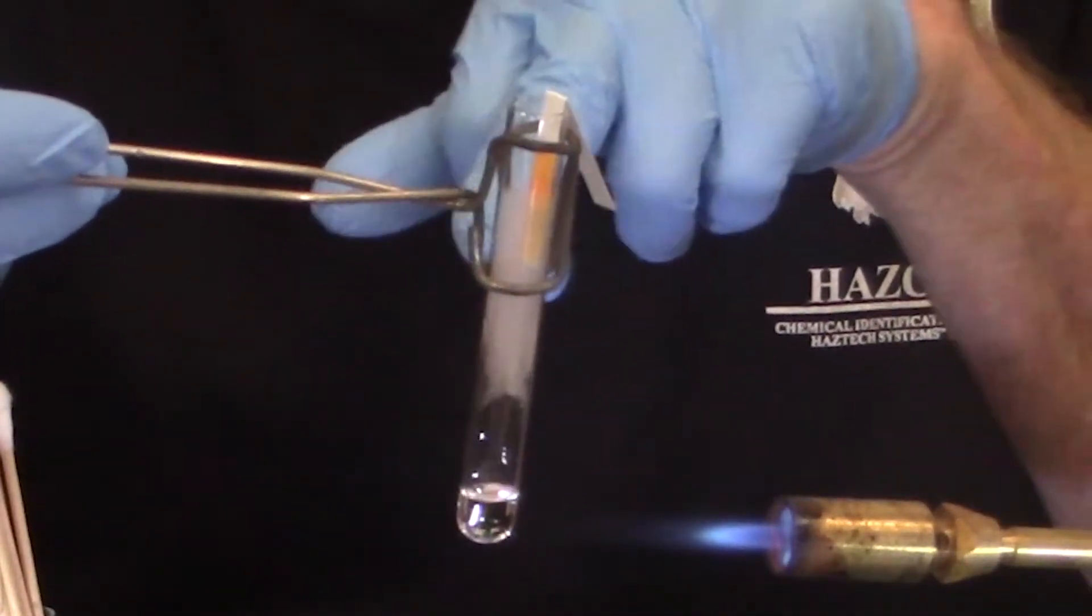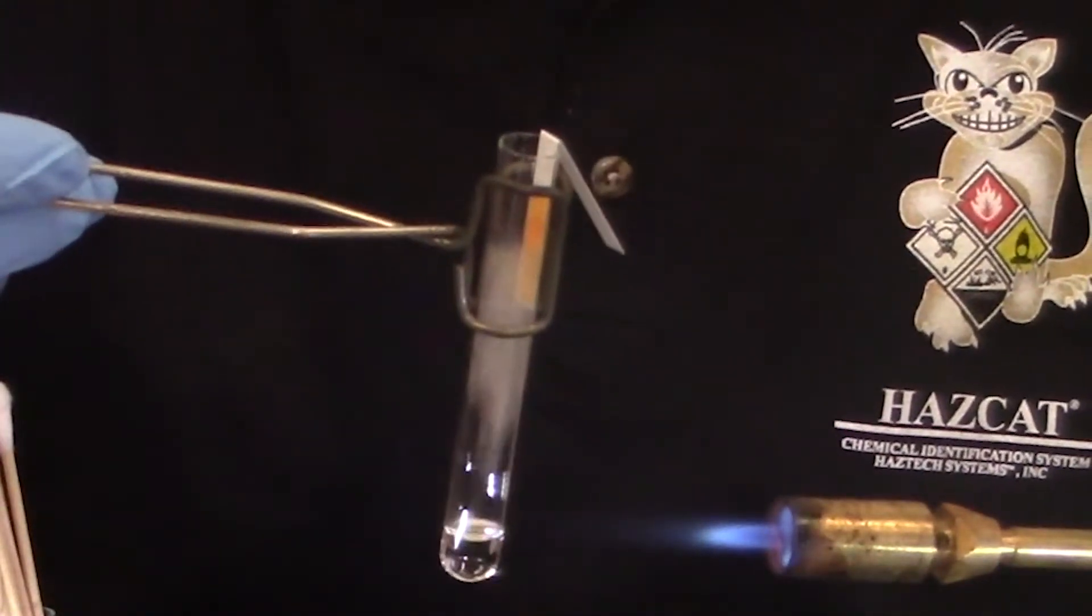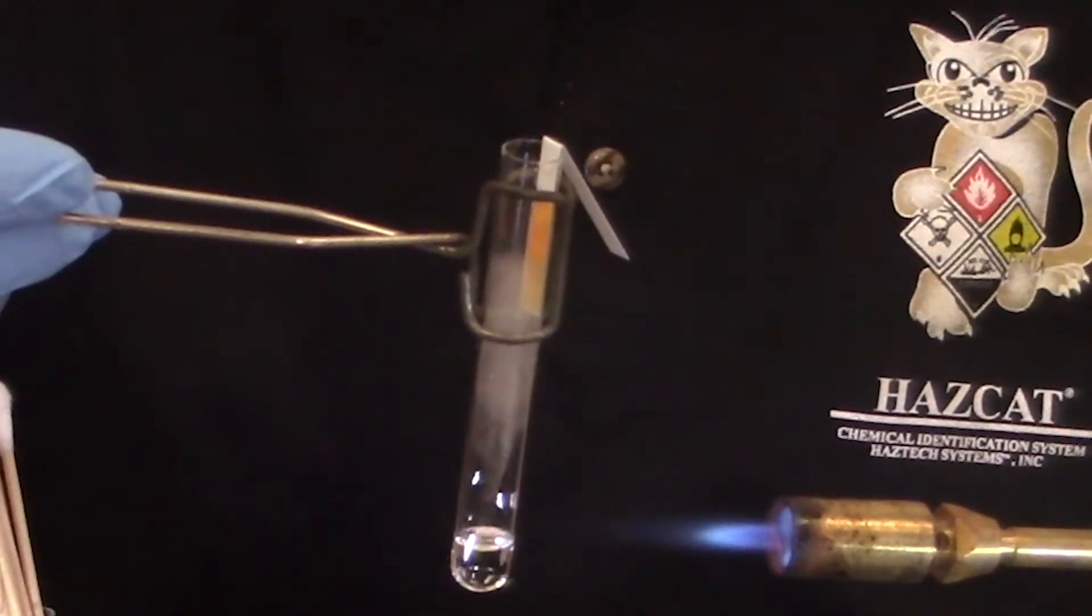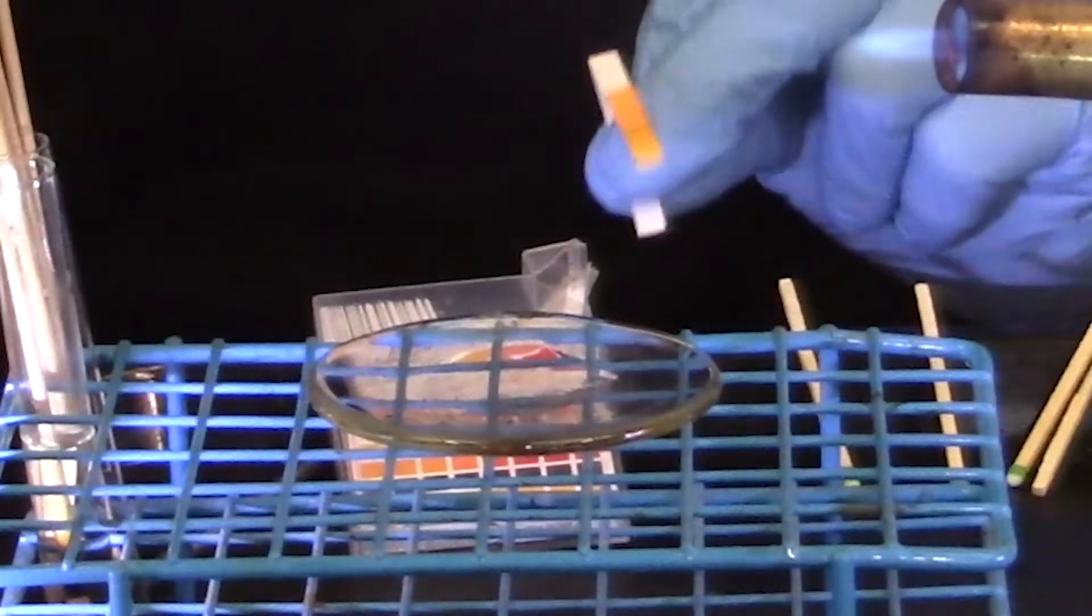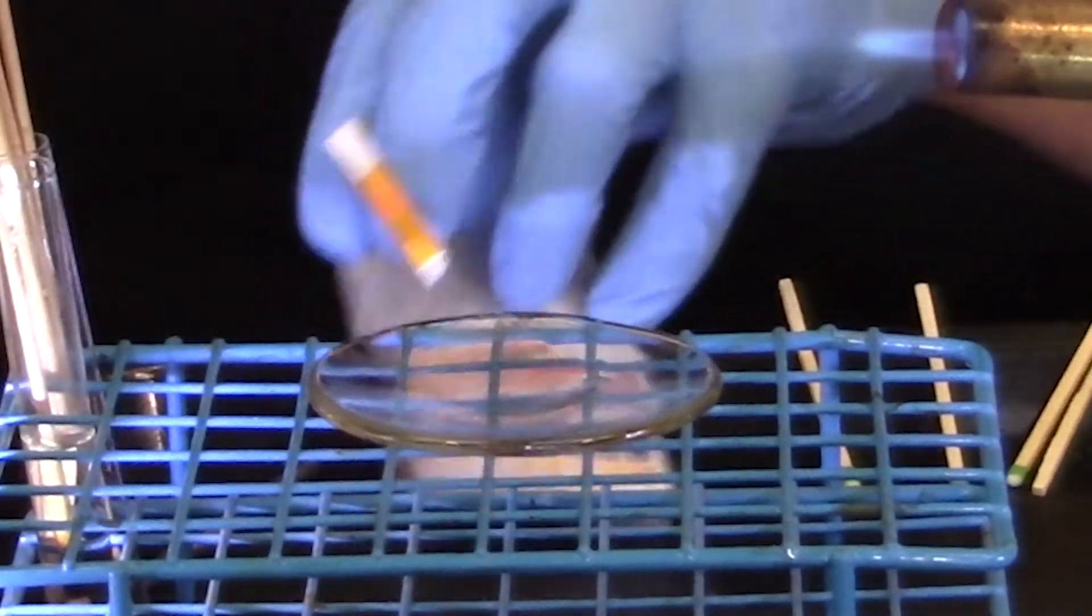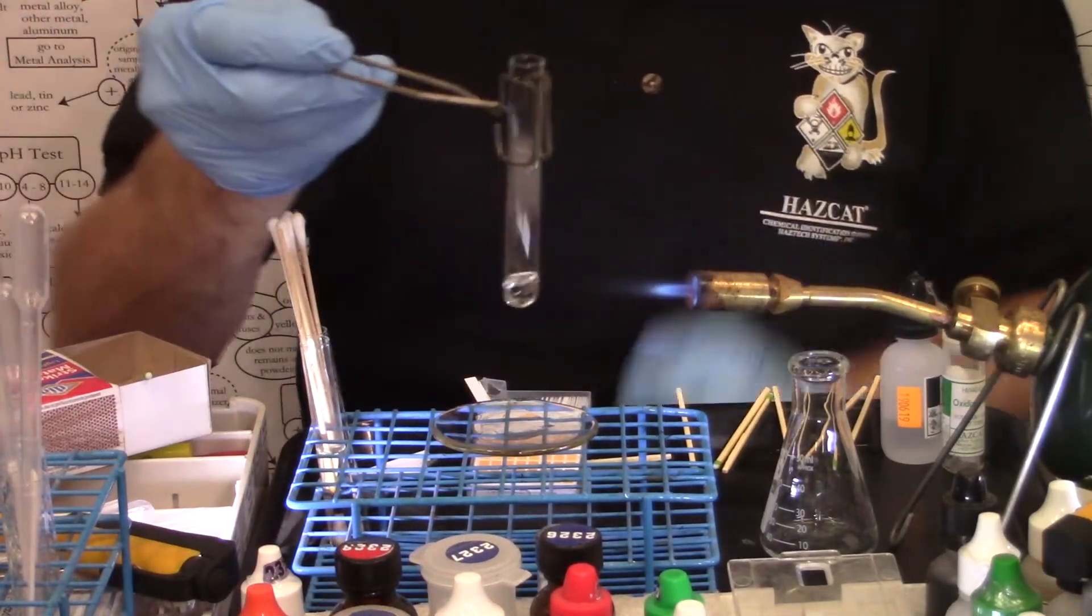Once I get a few vapors, I allow the pH paper to sit in the vapors for 10 seconds. I'll take the pH paper out, read it, about neutral, about a six, let's say, and then continue on.